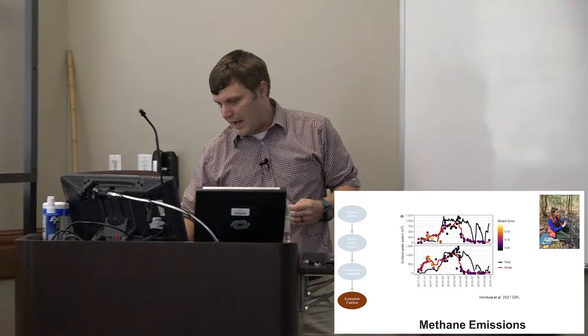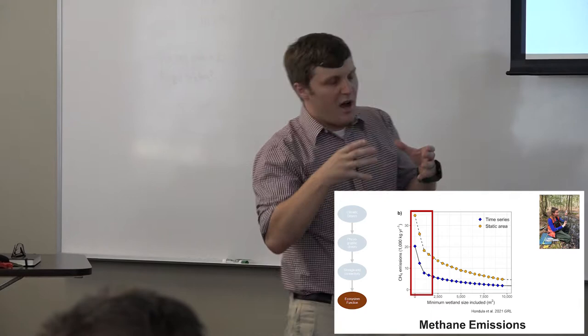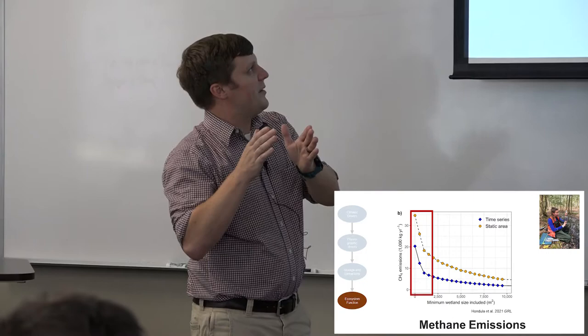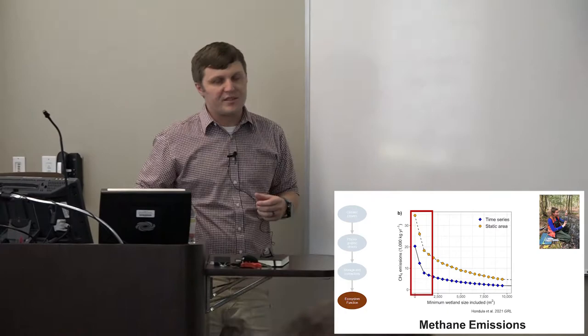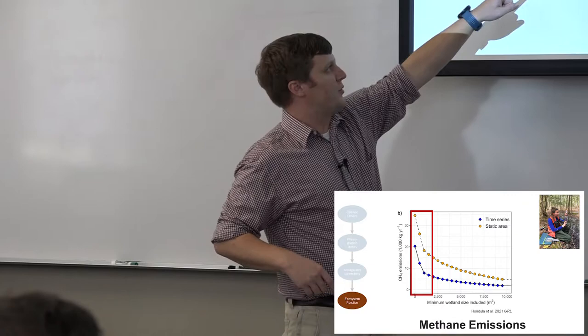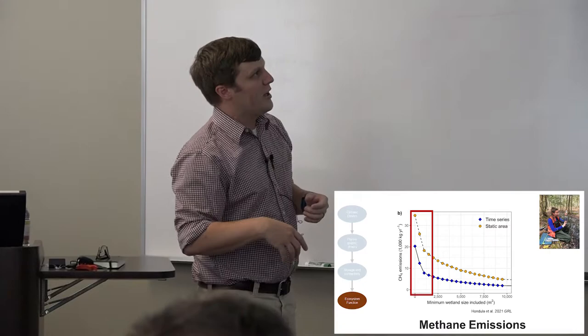But regardless, the point that we really wanted to make is that she took her wetlands, the wetlands that we were able to capture, and she binned them by size. And what we did is we looked at what the methane emissions produced by each size class. And she did this both looking at a time series and static area. And there's important ramifications for that from an earth system modeling perspective. But what I want you guys to take away, these smallest wetlands produce way more methane. And other studies have shown this, but this is by far the most important thing that came out of our group's work so far, just how much methane these really small wetlands produce.